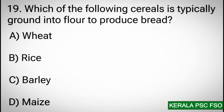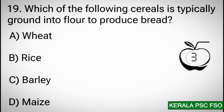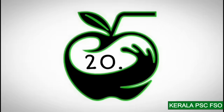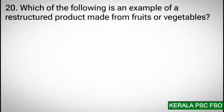Question 19: Which of the following cereals is typically ground into flour to produce bread? Options: a) wheat, b) rice, c) barley, d) maize. Correct answer: a) wheat.